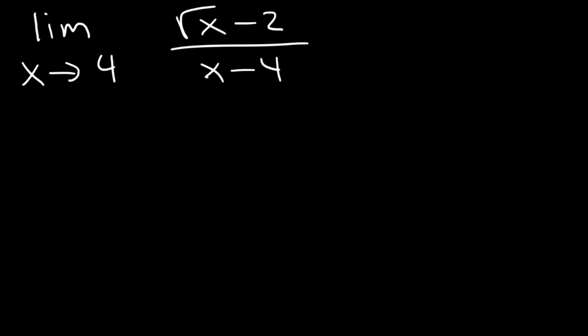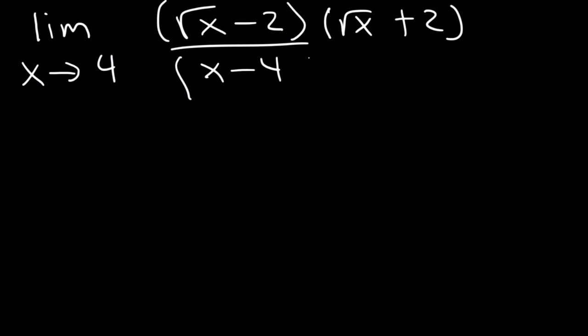Whenever you have a radical, what you need to do is multiply by the conjugate. The conjugate of root x minus 2 is the square root of x plus 2. And whatever you do to the top, you must also do to the bottom.